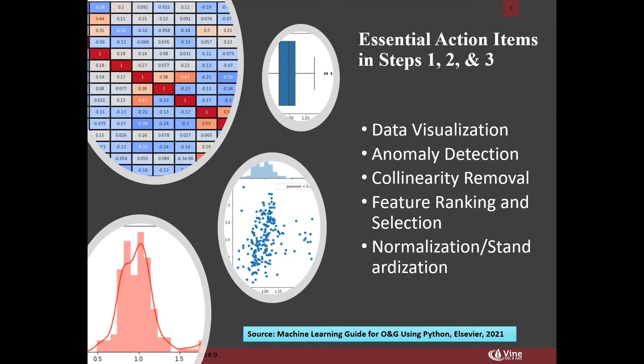Another important step is collinearity removal. It's important to remove parameters that are collinear — meaning they provide the same information. For example, in completions work, sand per foot and water per foot are often collinear: the more sand per foot you pump, you also tend to pump more water per foot. When the Pearson or Spearman correlation coefficient is high — usually more than 90% — you can remove one, because including both can confuse your model. It is important to remove those collinear features.